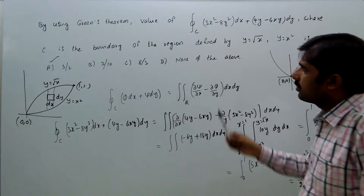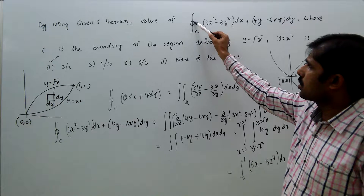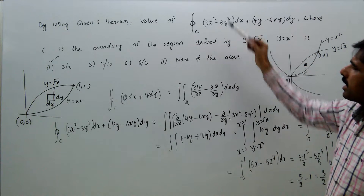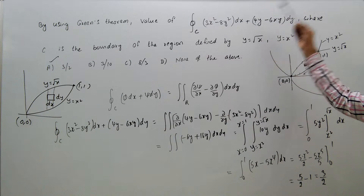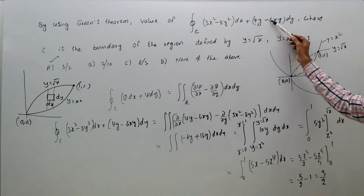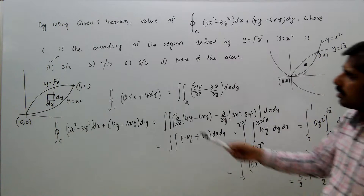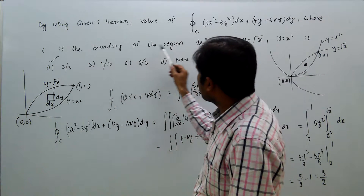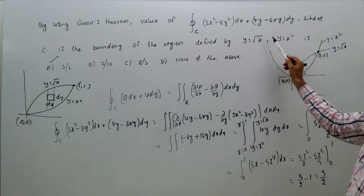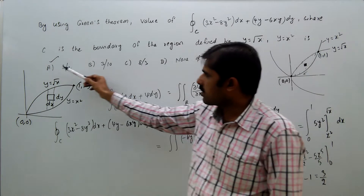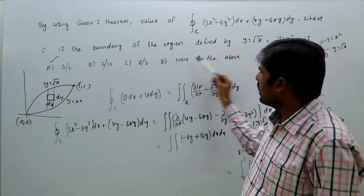By using Green's theorem, find the value of the closed integral: (3x² - 8y²)dx + (4y - 6xy)dy, where C is the boundary of the region defined by y = √x and y = x². Options: a) 3/2, b) 3/10, c) 8/3, d) none of the above.